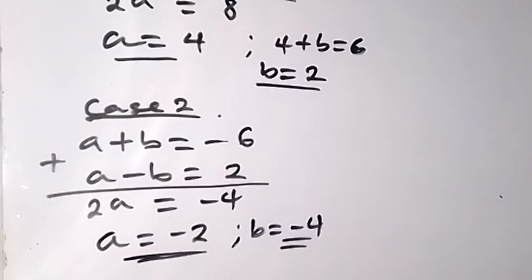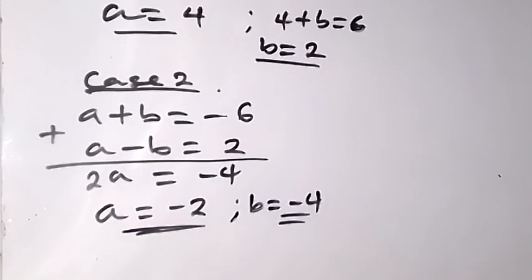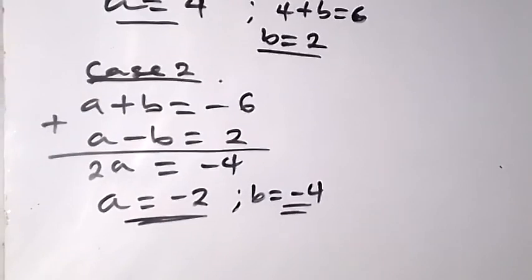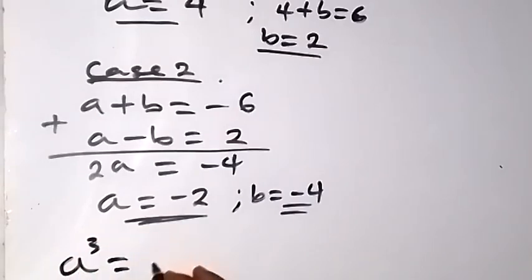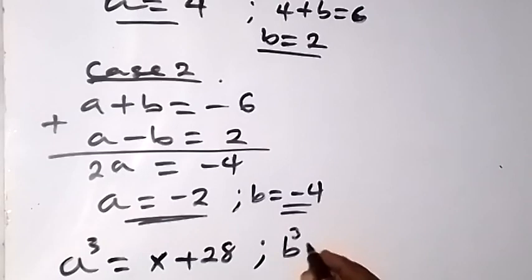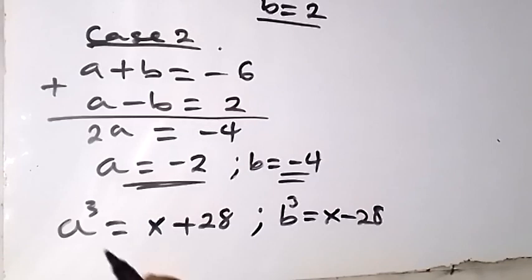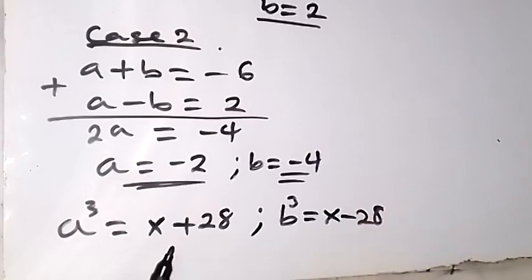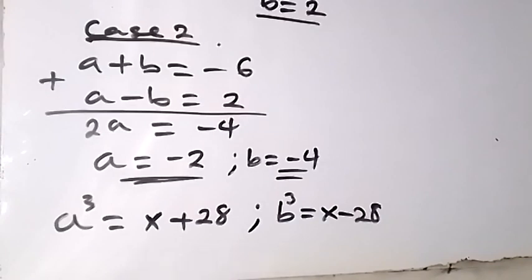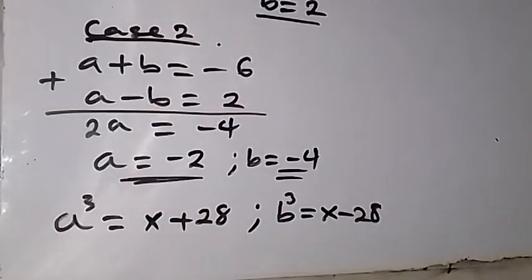Now that we know the values of a and b, we can recall that we represented a and b with something when we started. We understand that our a cubed is equal to x plus 28 and our b cubed is equal to x minus 28. By substituting the values of a and b we got into these expressions, we are going to see the answers we desire. And for both a and b, we get the same thing.